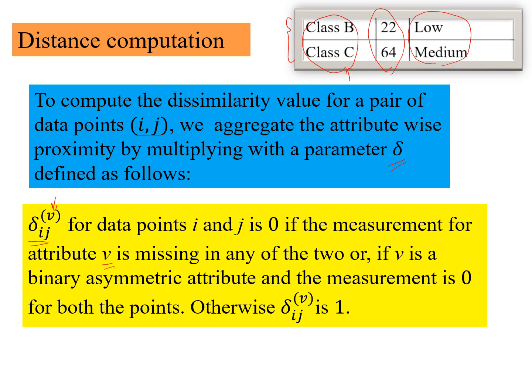So there are two cases when this would be 0 or if v is a binary asymmetric attribute and the measurement is 0 for both the points. We can recall from our previous video on binary attributes, that for binary asymmetric attribute, if both the measurements are 0, we do not want to count it in the distance computation.